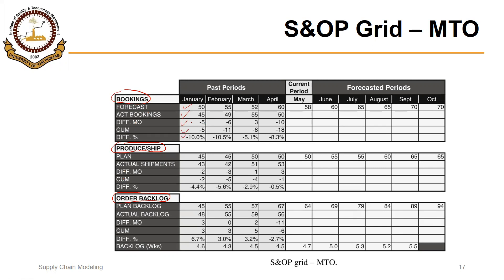Just as a recall, if this difference is negative, that means actual bookings are less than the forecast — so A minus F is negative — meaning you are over-forecasting, and vice versa.